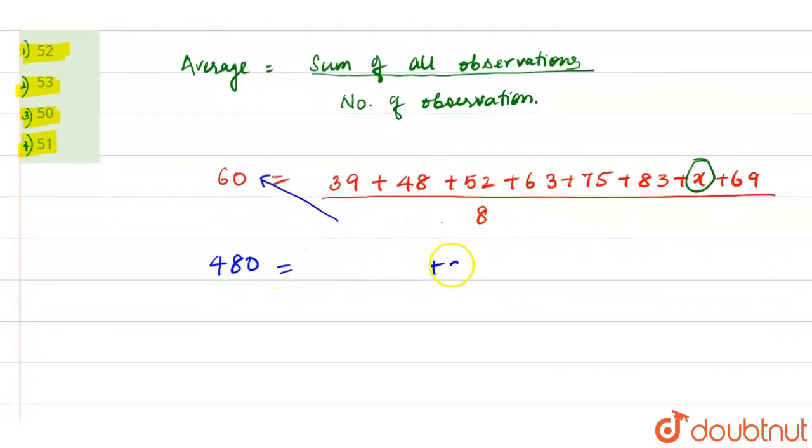Now, we will add all these terms. We write x as it is, and the rest of our terms are 39, 48, 52, 63, 75, 83, and 69. When we add all these terms, our answer is 429.